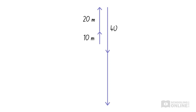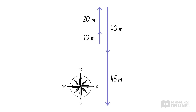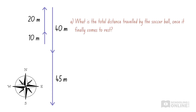Next, we should draw a diagram and decide on a sign convention, since this will make the question a lot easier to answer. Here, we've chosen north to be upward, since that makes the most sense. The first part of this question asks for the total distance travelled by the ball. So we add the individual distances — 10 metres, 20 metres, 40 metres, and 45 metres — to get a total distance of 115 metres. Notice how we ignored the direction that the ball was kicked? We did this because distance is a scalar quantity, which doesn't include a direction.